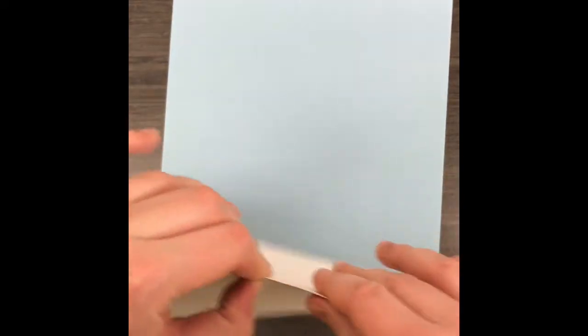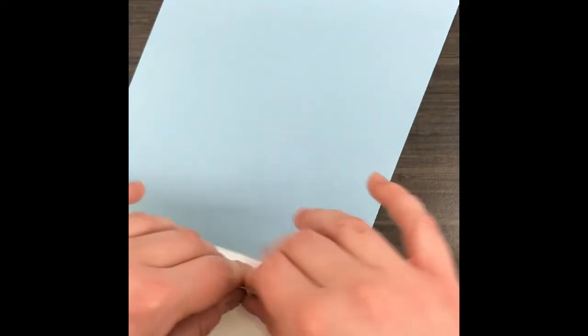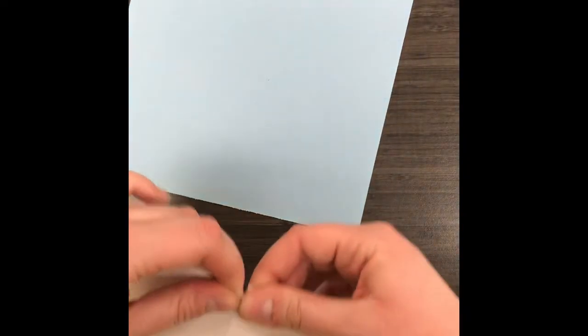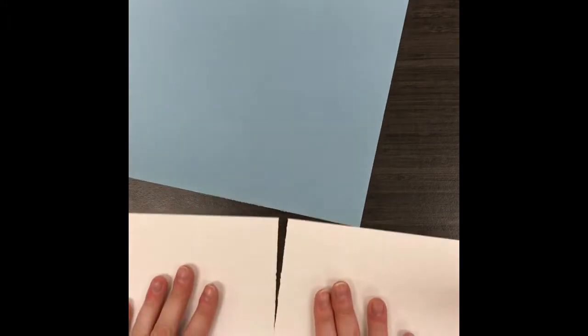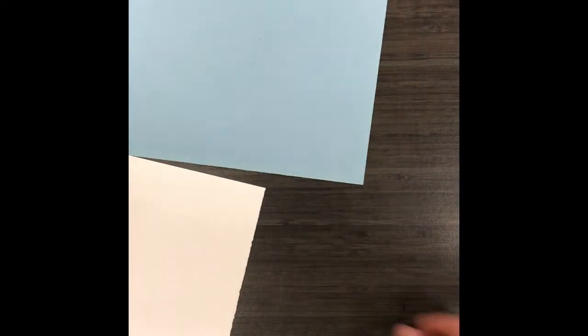You could either just cut your paper right in half or you could fold it in half and then keep folding back and forth until you're able to rip the paper in half. Either way works just fine. I prefer the folding because I think it makes it look a little bit neater and easier to get half a sheet.